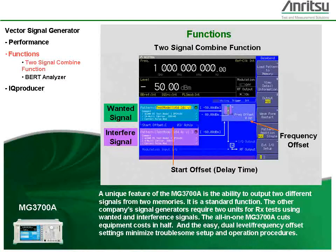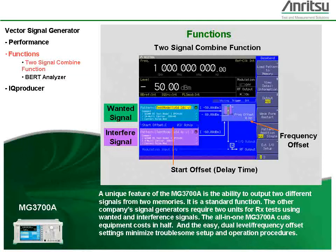A unique feature of the MG3700A is the ability to output two different signals from two memories — a standard function. Other general-purpose signal generators require two units for RX tests using wanted and interference signals. The all-in-one MG3700A cuts equipment costs in half, and the easy dual-level frequency offset settings minimize troublesome setup and operation procedures.